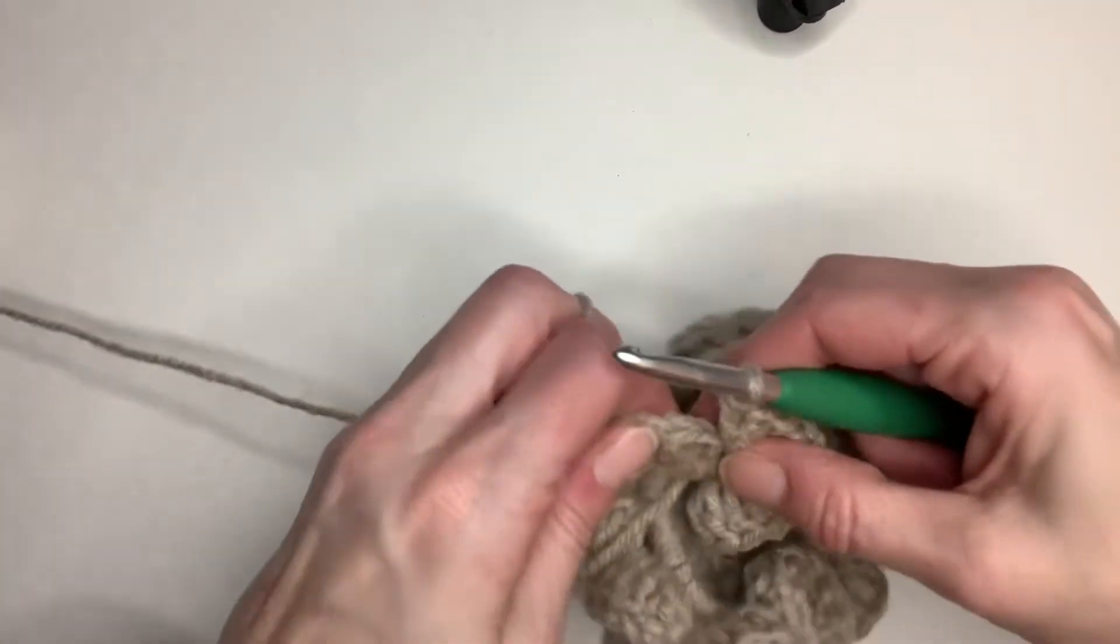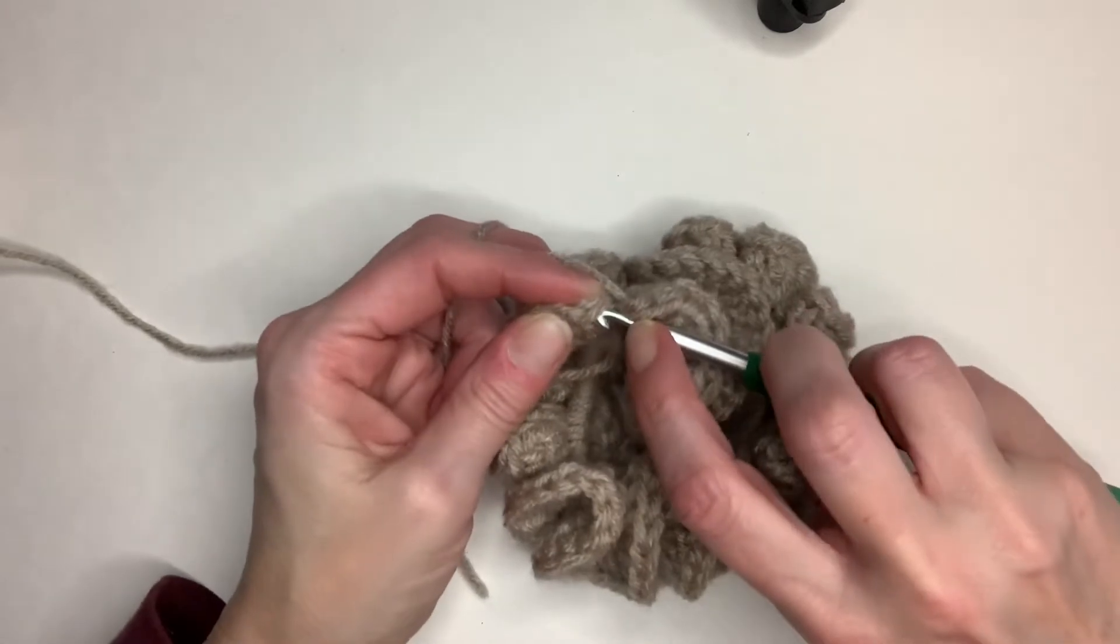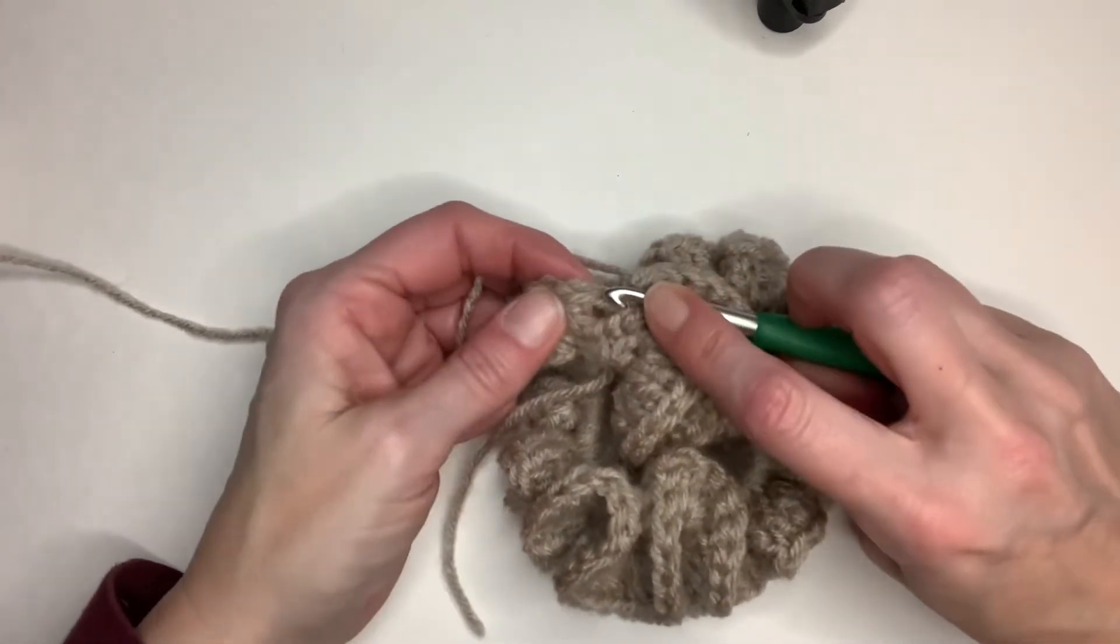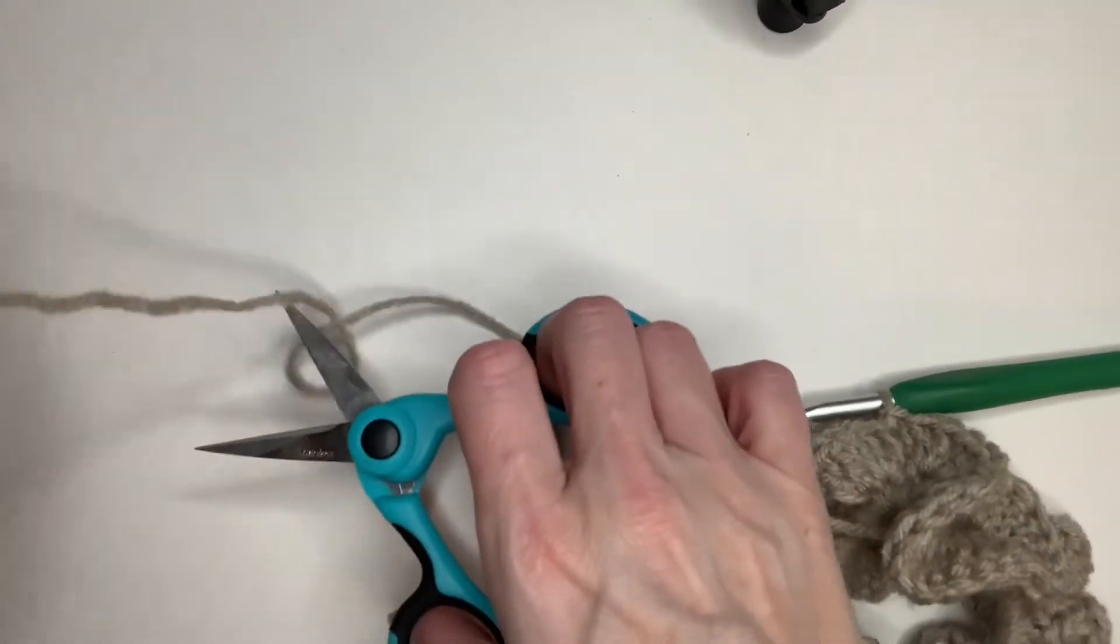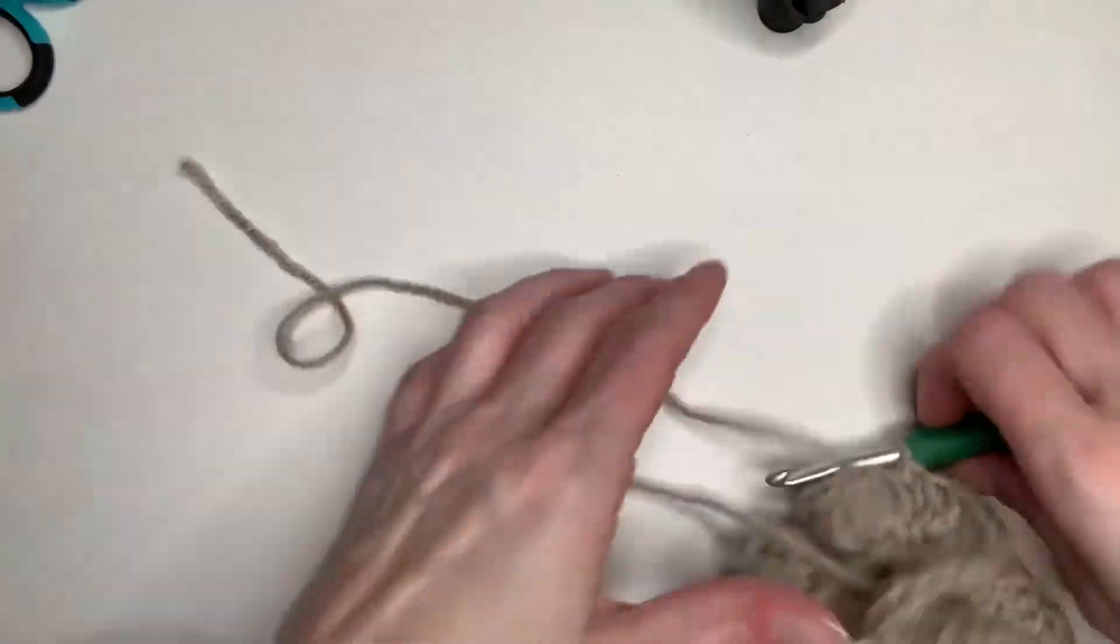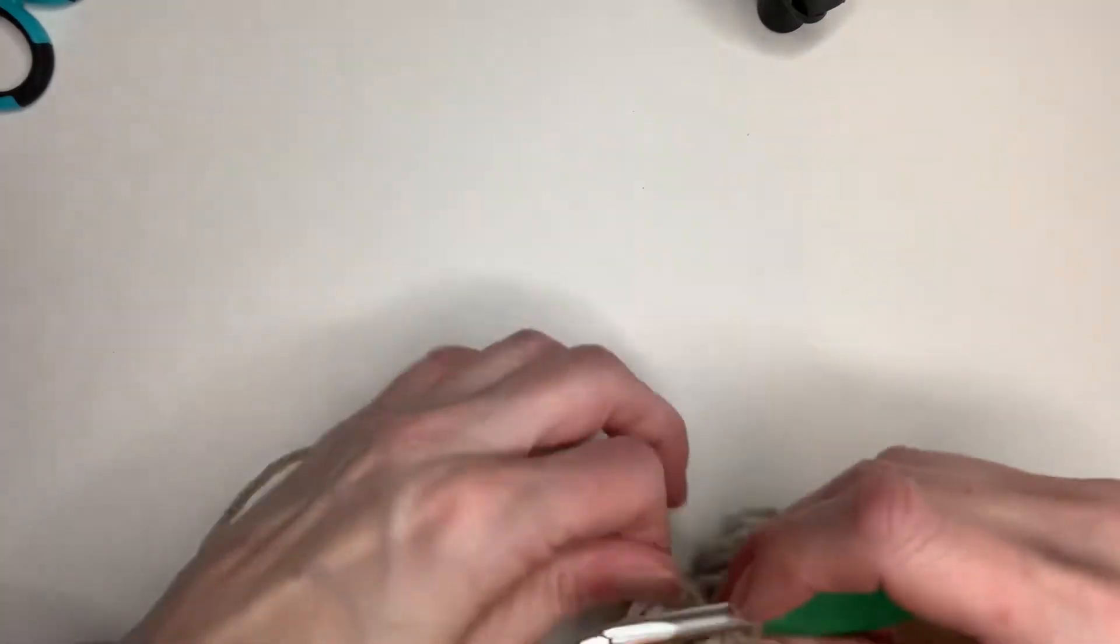So then to finish this off, I'm going to slip stitch right into the top of that first double crochet there. Alright. I'm going to cut my yarn and then I am going to pull this through.